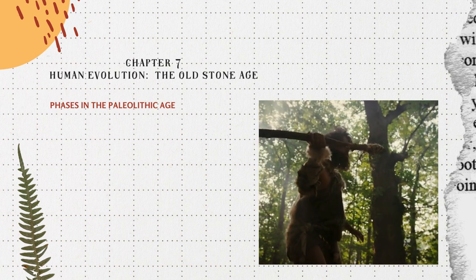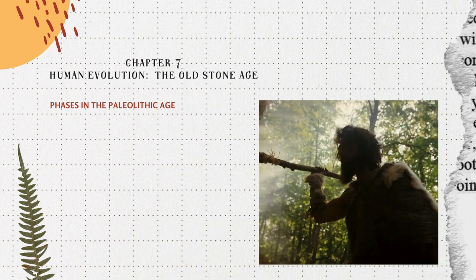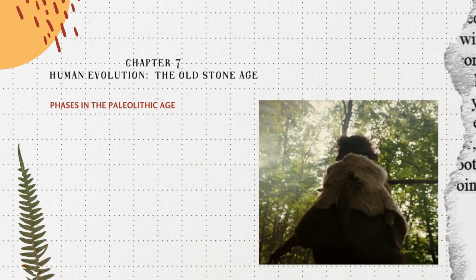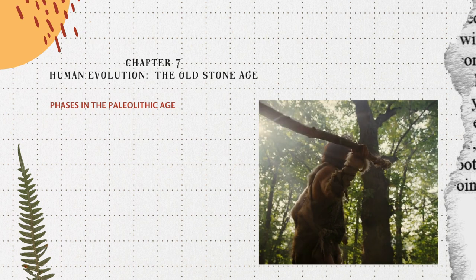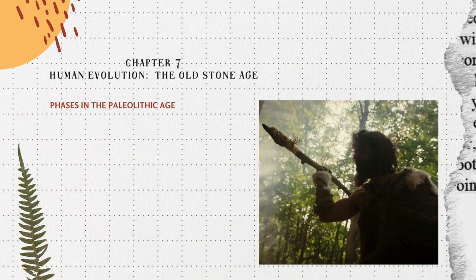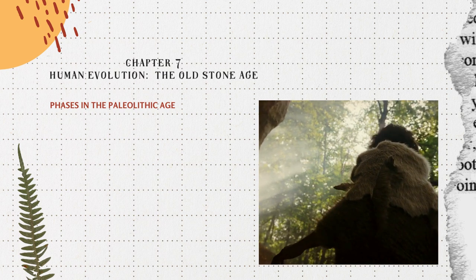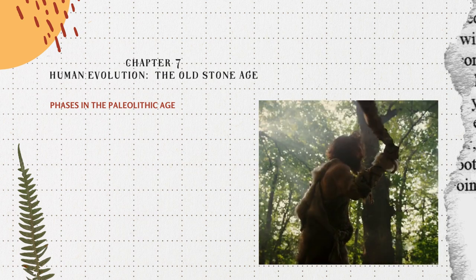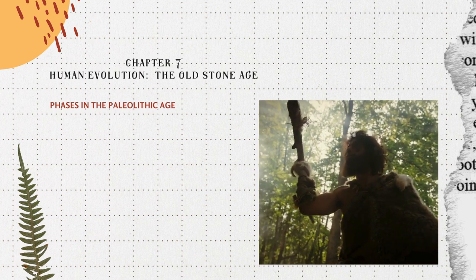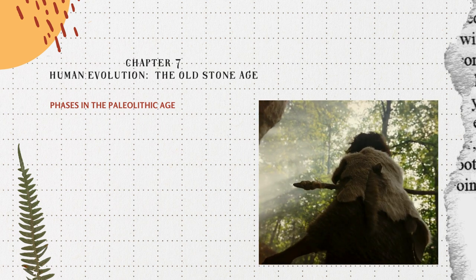The lower Paleolithic or the early old stone age covers the greater part of the ice age. In India it is not older than 600,000 years, a date given to Bori in Maharashtra, considered to be the earliest lower Paleolithic site. People used hand axes, cleavers and choppers. The axes found in India are more or less similar to those of Western Asia, Europe and Africa. Stone tools were used largely for chopping, digging and skinning. Early old stone age sites have been found in the valley of River Sohan in Punjab, now in Pakistan.